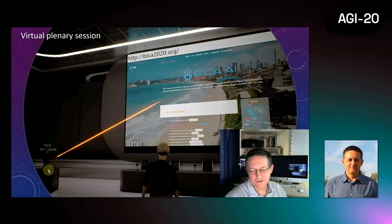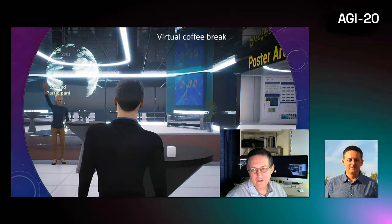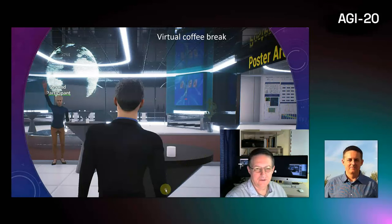The speaker stands at the podium and uses a laser pointer — all these are avatars, of course. Then, after the talk, you go to the coffee break area and have informal conversations with other participants. From there you may proceed to the poster session area where posters can be presented by bots on demand.